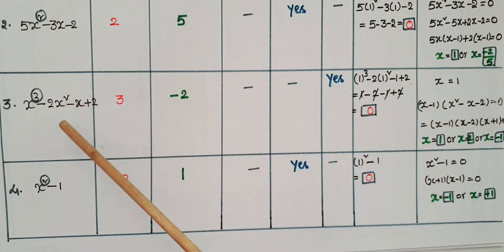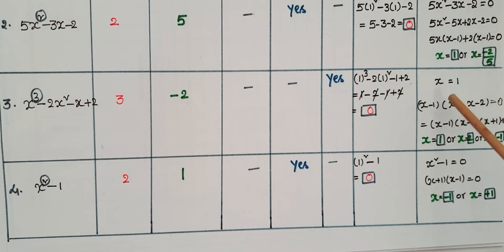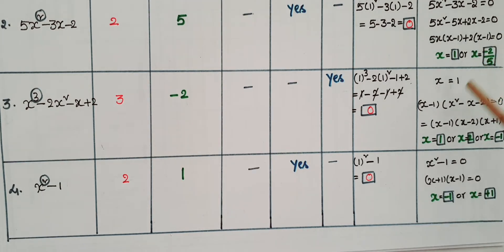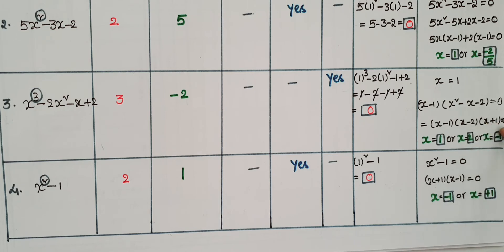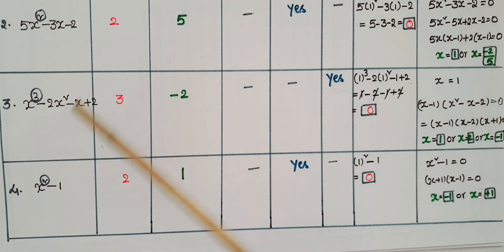So x minus 1 is a factor of this polynomial. If you divide this polynomial by x minus 1, you get x square minus x minus 2. Factorizing x square minus x minus 2 gives (x minus 2)(x plus 1). So (x minus 1)(x minus 2)(x plus 1) equals 0. Therefore x equals 1, x equals 2, or x equals minus 1 are the zeros of this cubic polynomial.